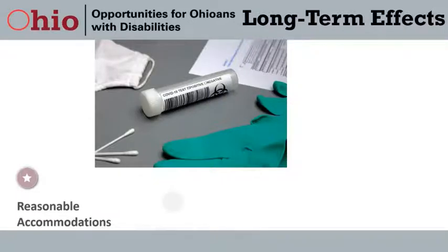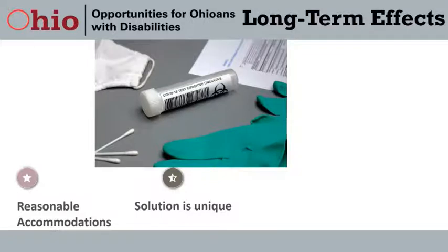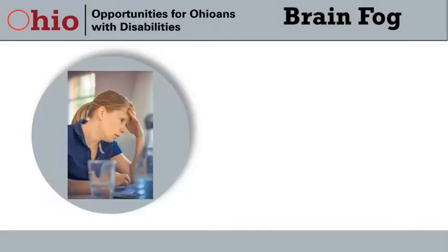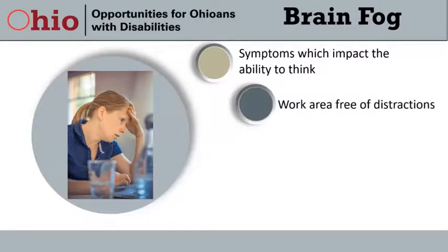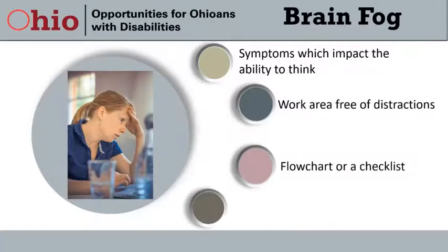There are ideas for reasonable accommodations for each of these long-term effects, and they fall into the same types of accommodation solutions used for all disabilities. Brain fog describes a collection of symptoms which impact the ability to think, like confusion, difficulty concentrating, disorganized thinking, and difficulty putting ideas into words. A few accommodation ideas include providing a work area free of visual or noise distractions, permitting the employee to use memory aids like a flow chart or a checklist, and allowing the employee to work uninterrupted for a period of time.